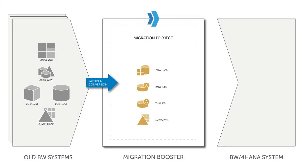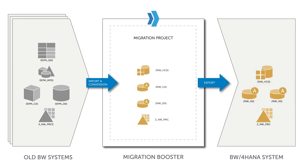We've exported the info providers and info objects into the target system. What's still missing is the reporting elements — we also want to migrate the queries, reusable key figures, and structures. This is still possible even though we made massive changes to the info provider structure, including renaming info objects so the composite provider consists of different info objects than the old multi provider. The old queries can still be copied and reused in the new system.